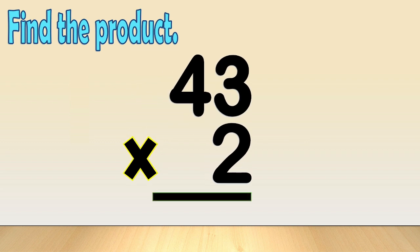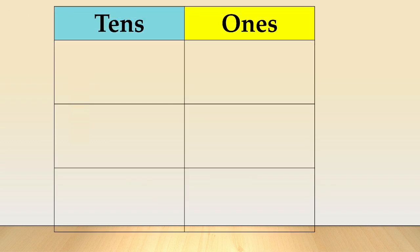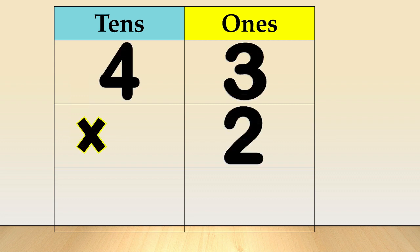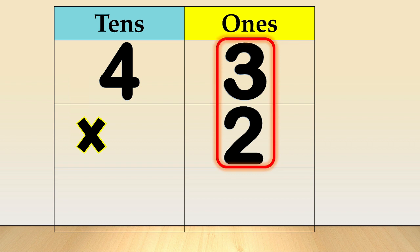Place the digit of the number in a column based on its place value. 43 times 2. Next, multiply the digit in the ones place with the multiplier 2. So, 3 times 2 is equal to 6 ones.